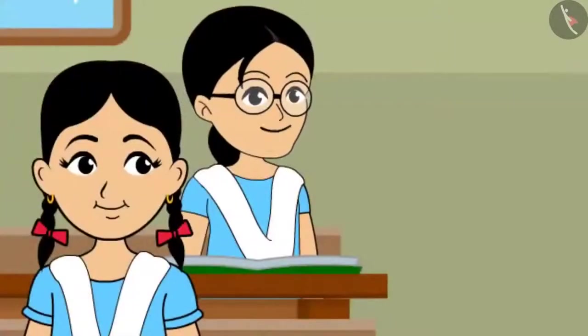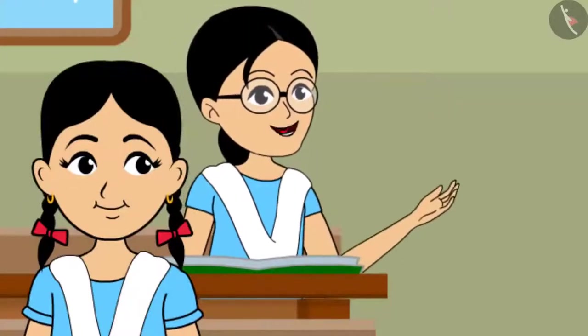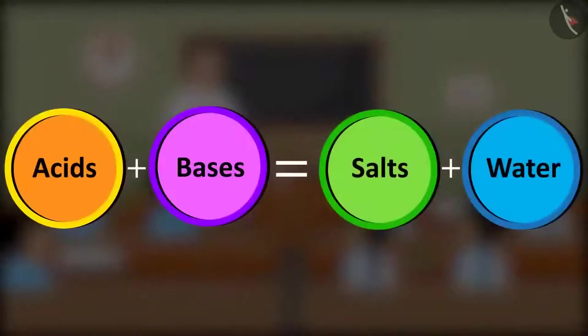What will happen when acids and bases get mixed, Rinku? When acids and bases meet, generally salts are formed along with water. The salt we consume is formed due to the combining of hydrochloric acid and sodium hydroxide.